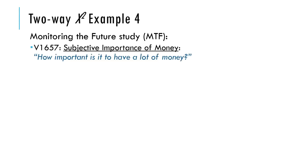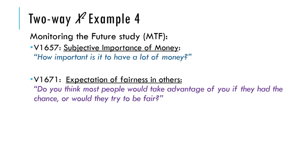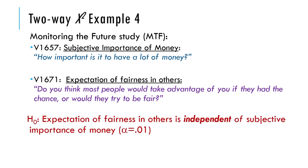Our final example comes from the Monitoring the Future study. I looked at two variables. These data are in the data set on the website. You can use that if you need to. One question that the kids in this study were asked, these were middle school kids, was how important is it to have a lot of money? The other one is, do you think most people would take advantage of you if they had the chance or would they try to be fair? I figured there would be an association. I thought this was an interesting thing to look at because I thought the cynicism and the money thing would go together.